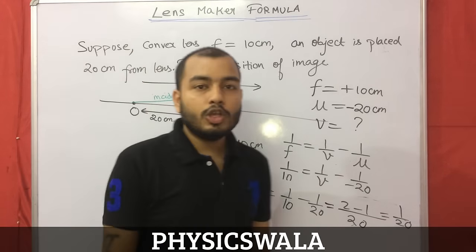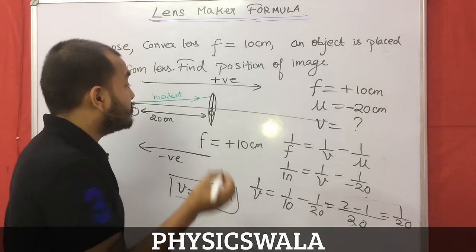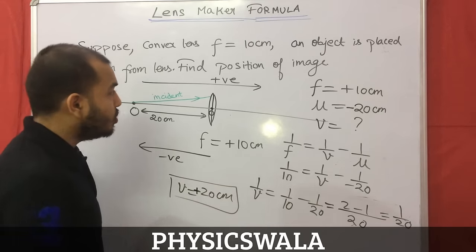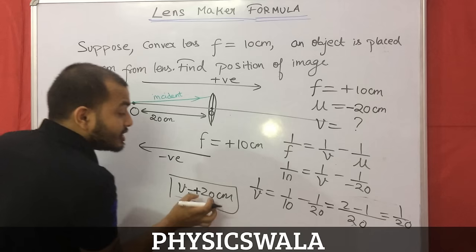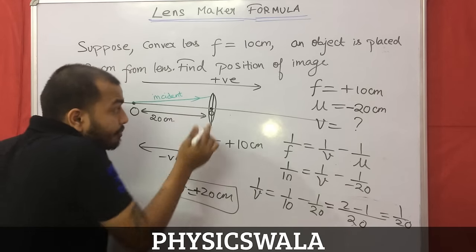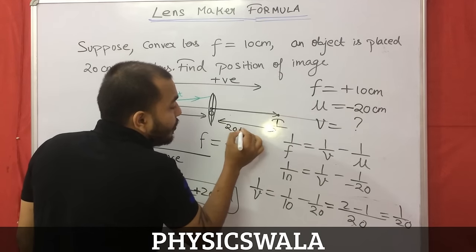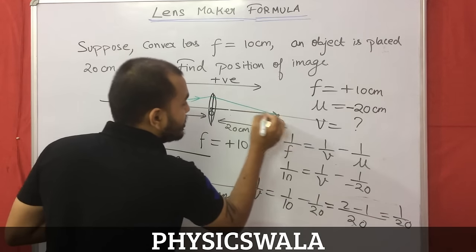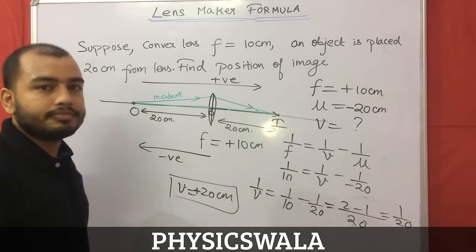The image distance is +20 cm from the optical center. Since v is positive, the image is formed in the positive direction — which is the direction of incident light — at 20 cm from the optical center. The light goes through the lens, refracts, and the image is formed there. Clear?